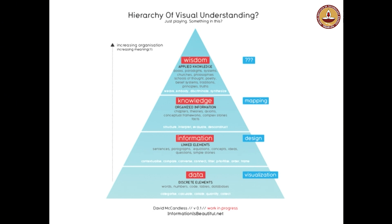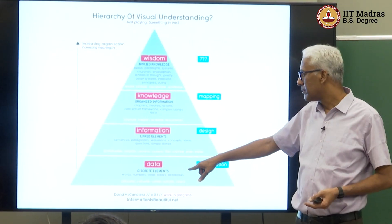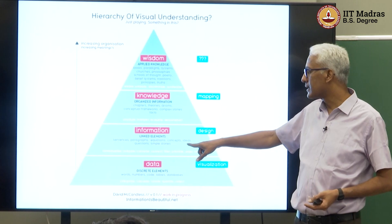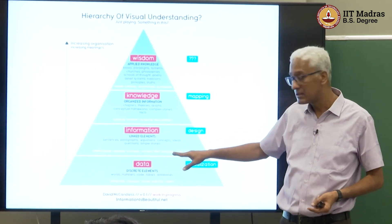At the bottommost of the pyramid is data — very wide — and you narrow it down selectively, discarding elements. The discrete elements are like words, numbers, code, tables or databases. What do you do with this? You can categorize, calculate, collate, quantify, collect them. When you start to link elements — these discrete elements become linked elements — words become sentences and paragraphs, numbers become equations, tables and databases become concepts, ideas, questions and simple stories.